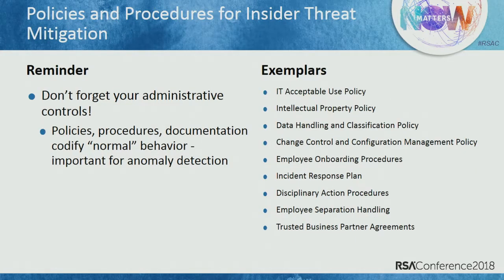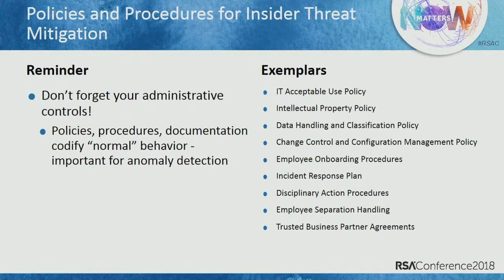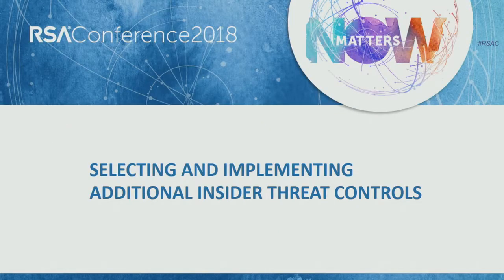Don't overlook administrative controls. These help from a deterrent perspective, focusing on policies and procedures, and documenting what is considered normal or acceptable behavior within an organization. Examples include the IT acceptable use policy, IP policy, data handling and controlling policies, incident response plan, onboarding, and separation policies. These administrative controls supplement the technical controls to prevent, detect, or deter individuals. I'll turn it over to Dan to go through the remaining components of the framework, starting with selecting and implementing the insider threat controls.